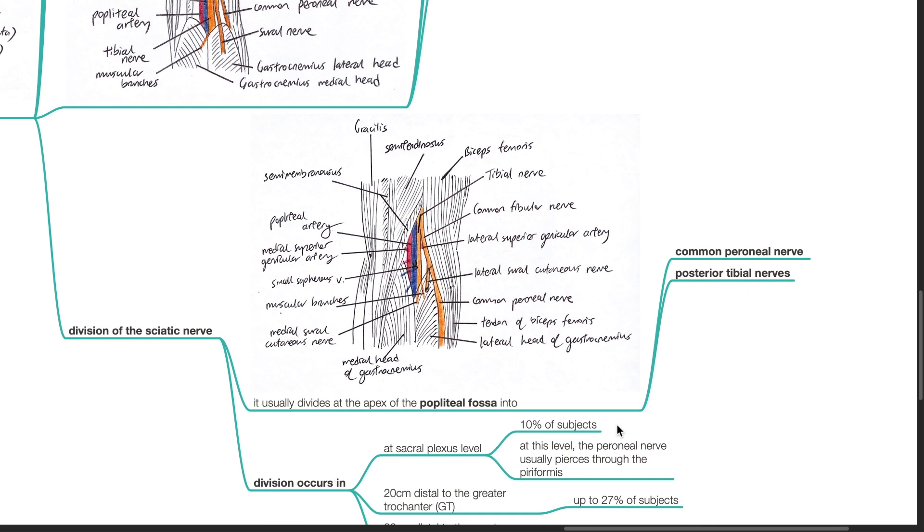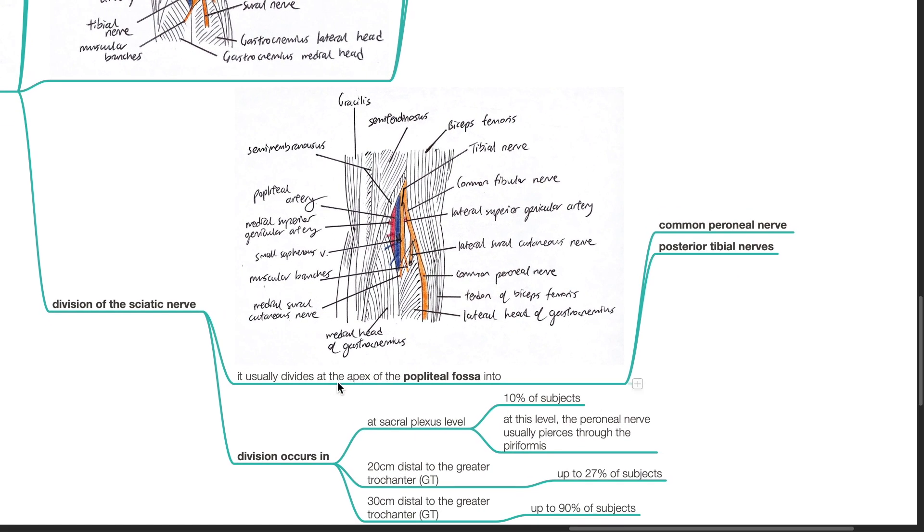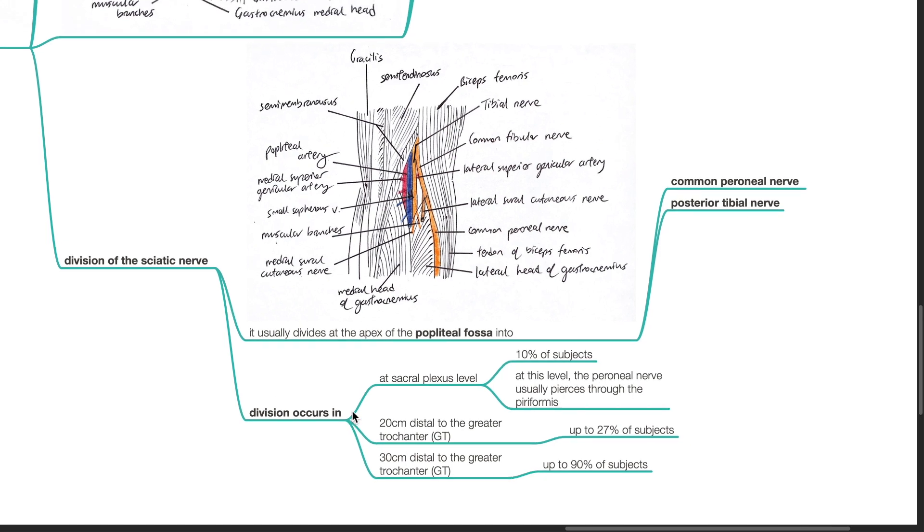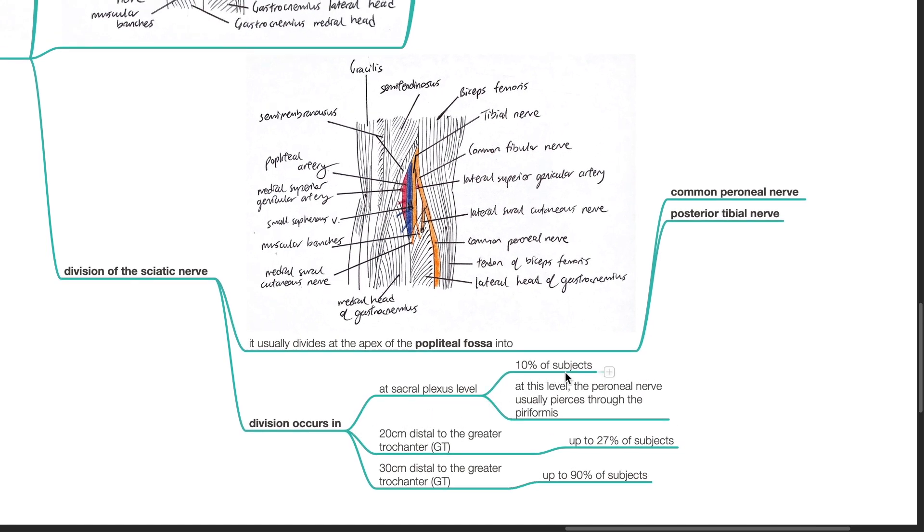Division of the sciatic nerve. It usually divides at the apex of the popliteal fossa into the common peroneal nerve and posterior tibial nerve. Division occurs at the sacral plexus level in 10% of subjects. At this level the peroneal nerve usually pierces through the piriformis.